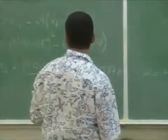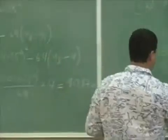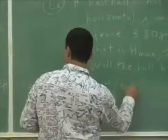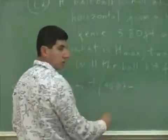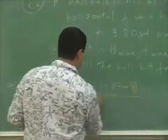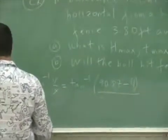So y final would be 90.87 minus its initial height, which was 4, divided by the distance that it went, 248.